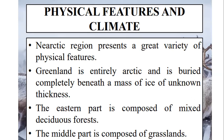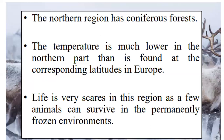The climatic conditions and physical features of the Nearctic region have vast diversity. For example, in Greenland the climate is entirely arctic, meaning huge ice caps are present, though the depth of the ice layers is unknown. The eastern part includes deciduous forest, which shows leaf fall every season. The middle part is composed of grassland, and the northern region has coniferous forest, where temperatures are quite low compared to other regions.